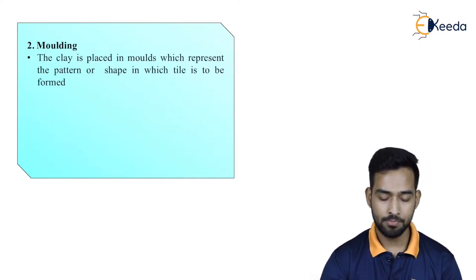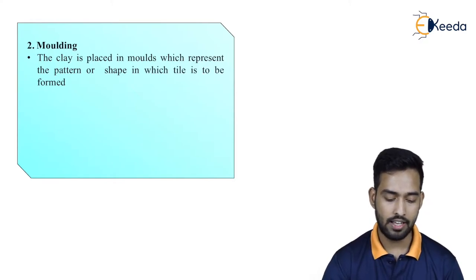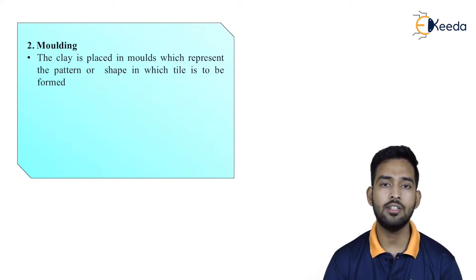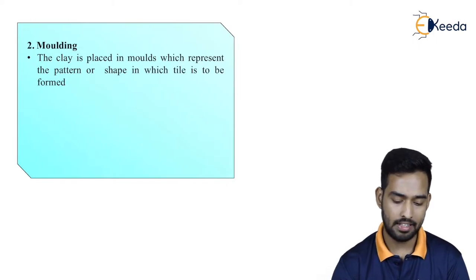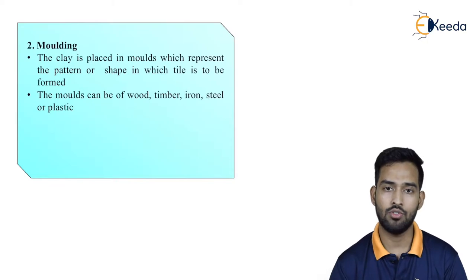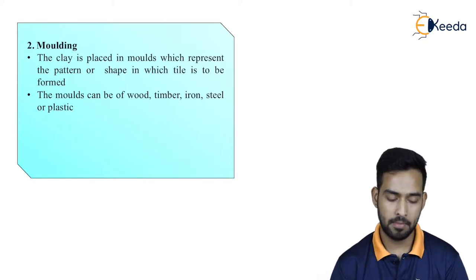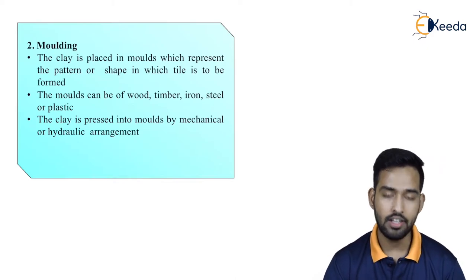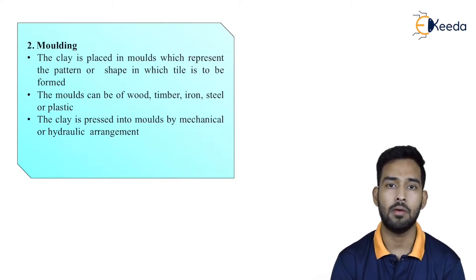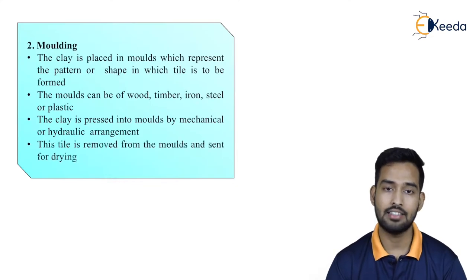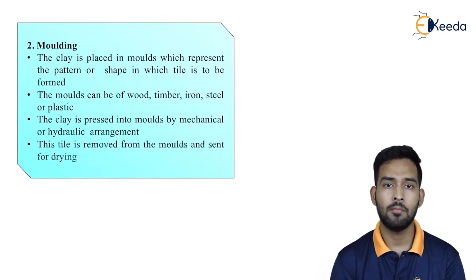In the next stage — molding — the clay is placed in molds which represent the pattern or shape in which tiles are to be formed. Tiles come in various shapes and sizes. The molds can be made of wood, timber, iron, steel, or plastic. The clay is pressed into the molds by mechanical or hydraulic arrangements, after which the tile is removed from the mold and sent for drying.